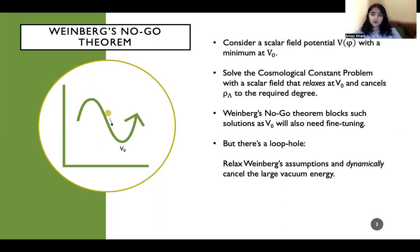There is a loophole though. What we can do is relax Weinberg's assumptions and dynamically cancel the large vacuum energy. These are known as self-tuning solutions where the field stays dynamic at the minimum or elsewhere as it cancels the vacuum energy.